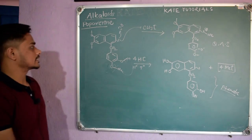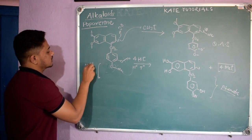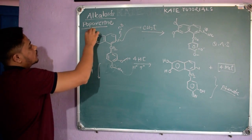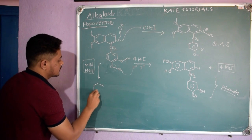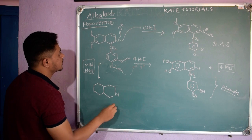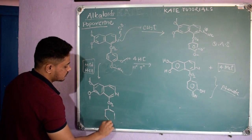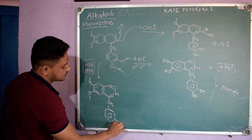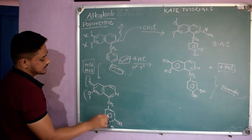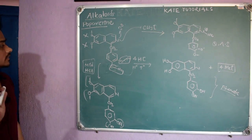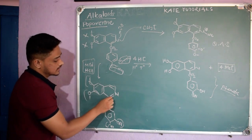They also reacted papaverine with mild HCl. There are O-methyl groups on both rings, but with mild HCl only two specific oxygens reacted — the ones near the CH₂ group — giving OH groups there. The other O-methyl groups near the isoquinoline nitrogen did not react and remained as OCH₃.